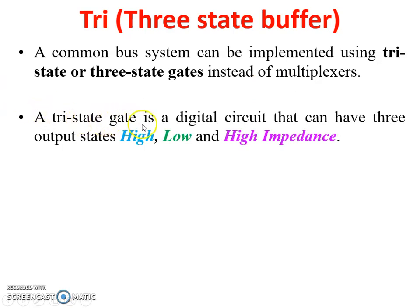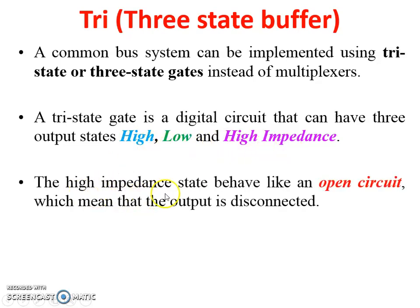A tri-state gate is a digital circuit that can have three output states: one is high, second one is low, and high impedance. The high impedance state behaves like an open circuit, which means that the output is disconnected. So whenever a high impedance is generated from the tri-state gate, we can say it is disconnected, or we can say it is an open circuit.